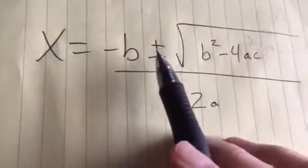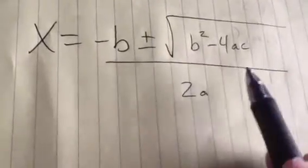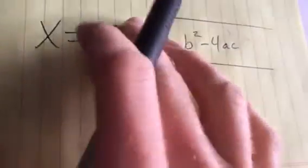So x equals negative b, plus or minus the square root of b squared minus 4ac, all divided by two times a. So, off to the side, we're just going to write, alright, a is 1, b is 4, and c is a negative 1.